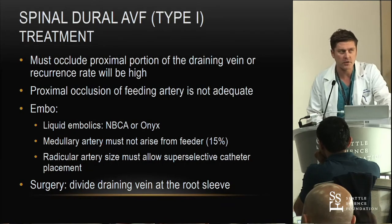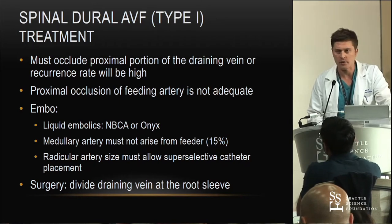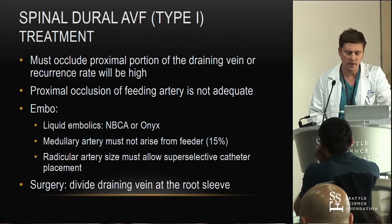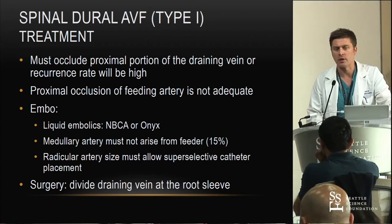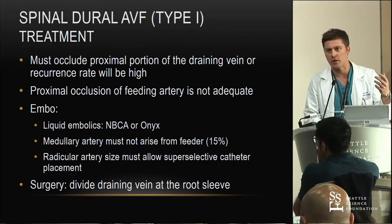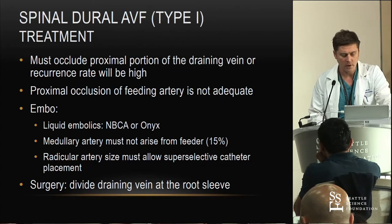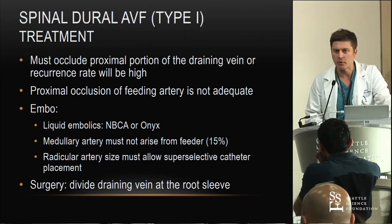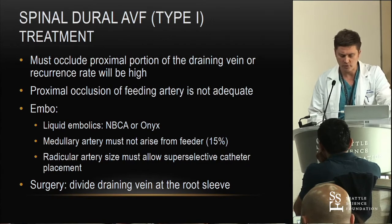In terms of treatment, you must occlude the proximal portion of the draining vein — otherwise they come back. It's not enough to just embolize or occlude the feeding artery. In the lab we've got NBCA, which is a glue, and Onyx, which is cohesive but not adhesive, so we can slowly inject it and the catheter doesn't get glued in. You don't want to embolize if the medullary artery comes off the feeder, and you want to make sure the anterior spinal is not involved. If you do surgery, you have to divide the draining vein at the nerve root sleeve.